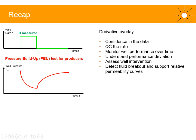To recap: by flowing the well, measuring the rate via a test separator or MPFM, and performing a PBU test, you can apply a derivative overlay to gain confidence in the data and QC the rate. Simply by looking at the plot you can monitor well performance over time, understand the cause of performance deviations, and assess the impact of well interventions on skin and KH. You can also detect fluid breakout — gas breakout or predict water breakthrough — and use the results to support relative permeability curves.